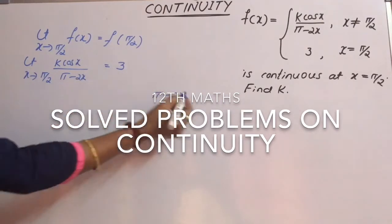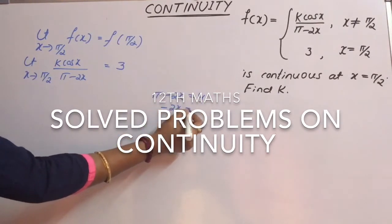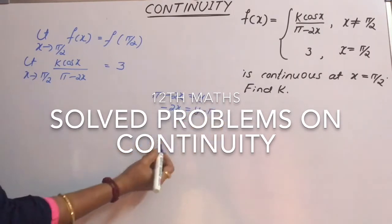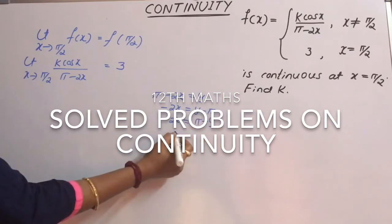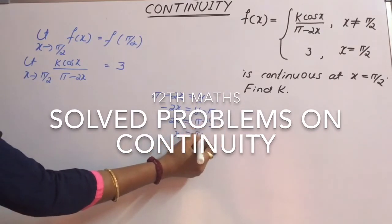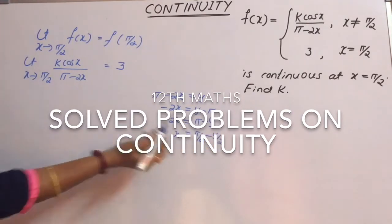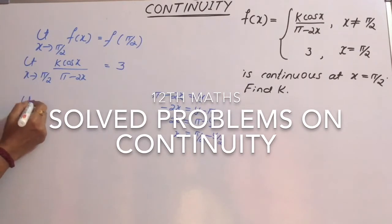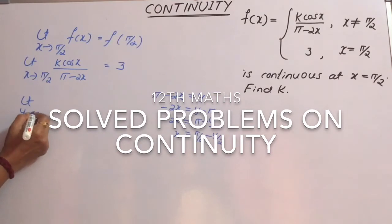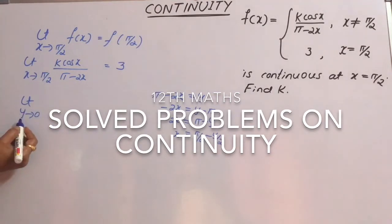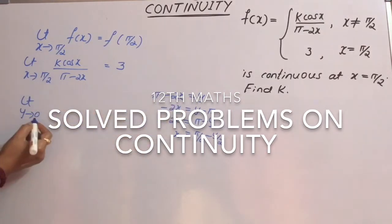Take π - 2x as y. If we simplify this, -2x becomes y - π, so 2x becomes π - y, and x = π/2 - y/2. If we back-substitute these values, the limit that was earlier approaching π/2 will now become y tends to 0, because substituting x = π/2 gives y = 0.